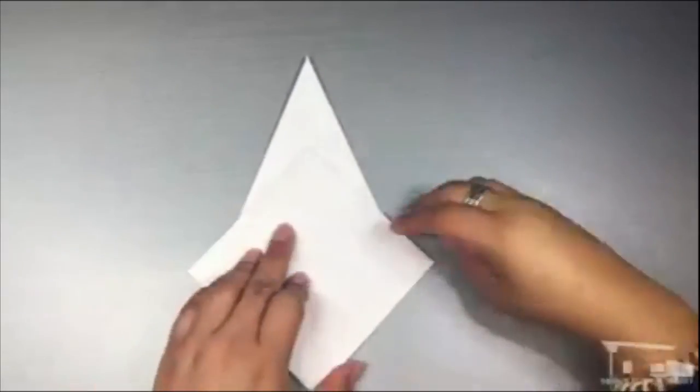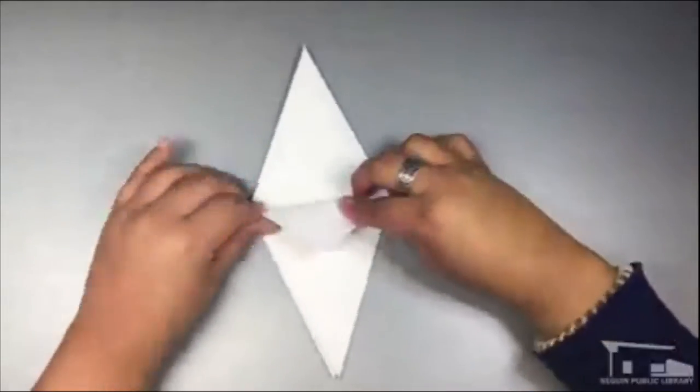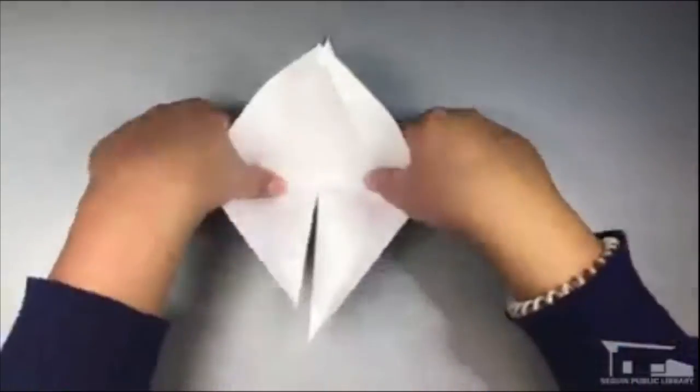Flip it over and do the same, folding the wings of the diamond into the middle, folding the point down, and opening it. You should now have an elongated diamond.